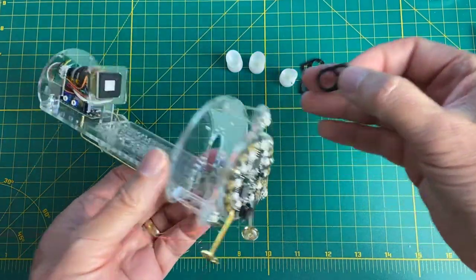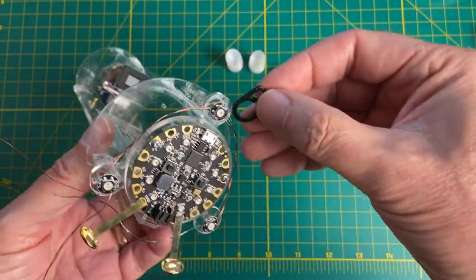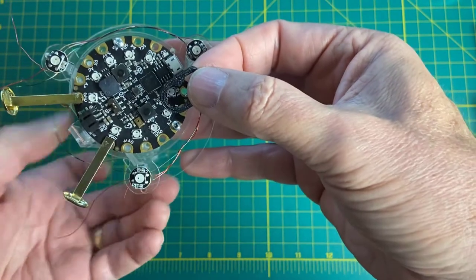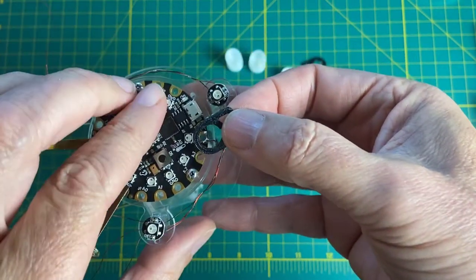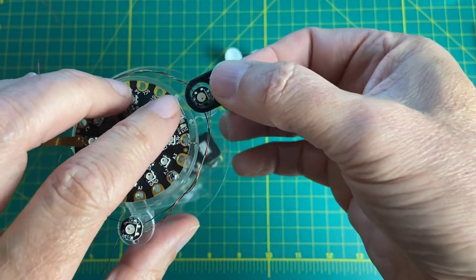Now, here are our flexible thruster gaskets, I guess you'll call them. These help center the spaceship inside the bottle. So I'll show you how these all fit together.